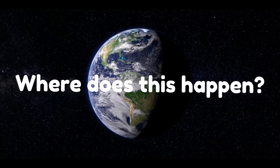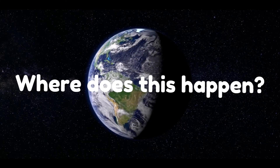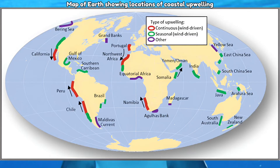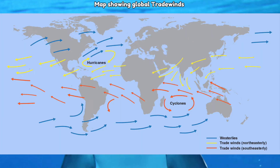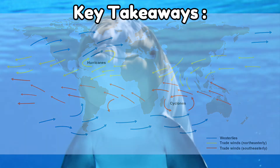So where does upwelling occur? It happens all around the world, but let's focus on the west coast of the US and Mexico where we have really strong upwelling occurring. This is because of strong trade winds, which you can see here are blowing water offshore and causing that water to come up from the deep.